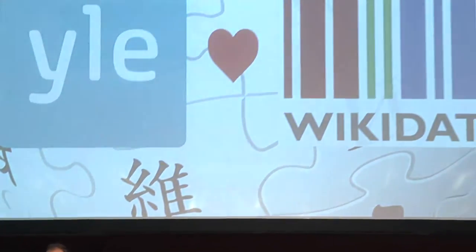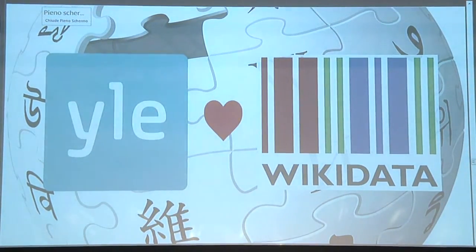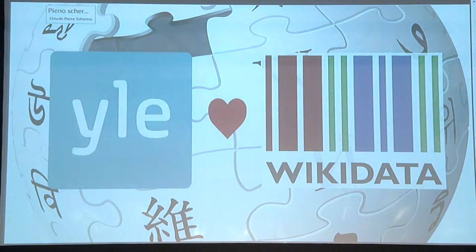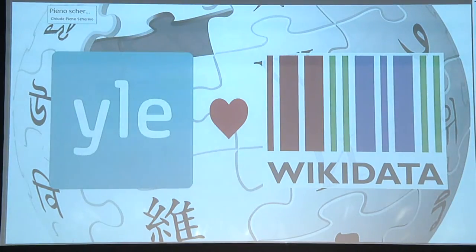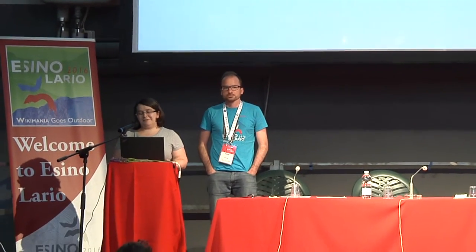Or we have Yle, the Finnish broadcasting agency, who use Wikidata concepts to tag their news articles. They have articles in many different languages — the major ones are Finnish, Swedish, and English — and they use Wikidata to tag their articles and have a controlled vocabulary. And which I think is probably the coolest thing around Wikidata so far: it's called Ask Platypus. You can ask it a natural language question, like who is the director of a movie, and it will go to Wikidata and find the answer.